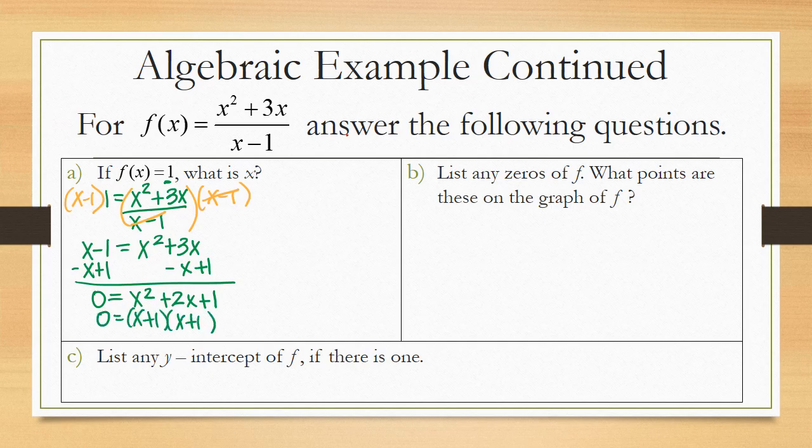Remember, if you need a review on factoring, there is a link on the first section's video for that. So now looking at this, I can see that this factor will equal 0 when x is negative 1, and that this factor will equal 0 when x is also negative 1. So the answer to this question, if f of x equals 1, what is x? Is x equals negative 1.